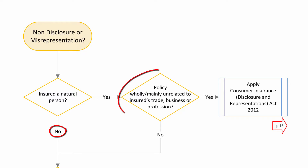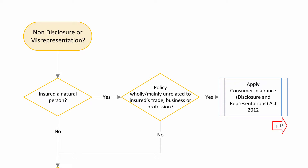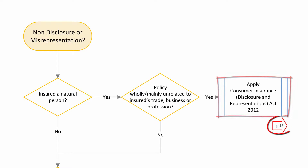If you answer yes, then move across and ask yourself whether the policy is wholly or mainly unrelated to the insured's trade, business or profession. If the policy is unrelated to their business, then you are dealing with a consumer claim. Non-disclosure and misrepresentation in relation to consumer claims is governed by an earlier piece of legislation, the Consumer Insurance Disclosure and Representations Act 2012, otherwise known as CIDRA. As a reminder, blue boxes indicate that more detailed consideration is needed and show you which page to turn to in the guide. In this case, turn to page 15 of the guide if you need to apply CIDRA.